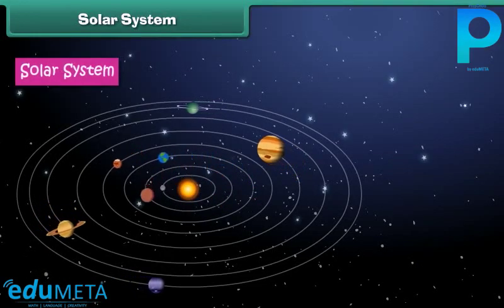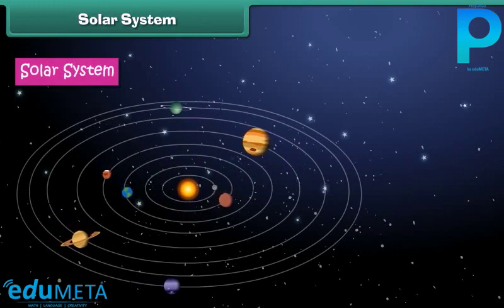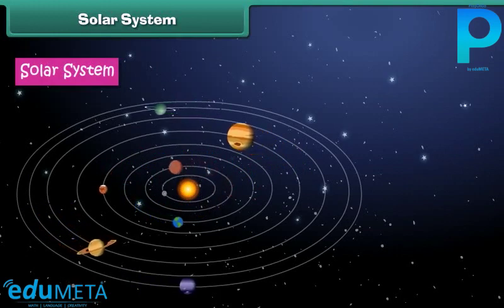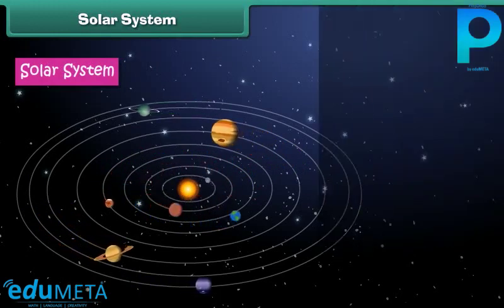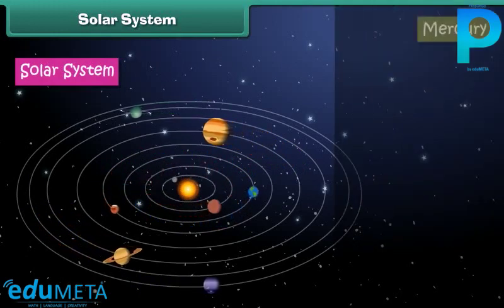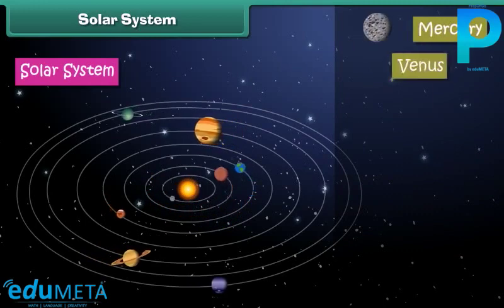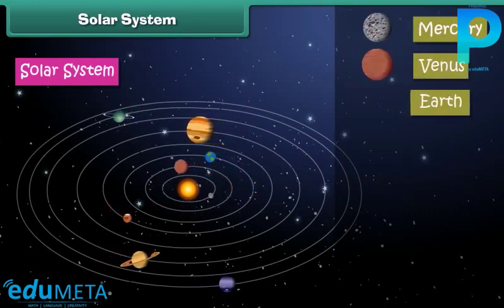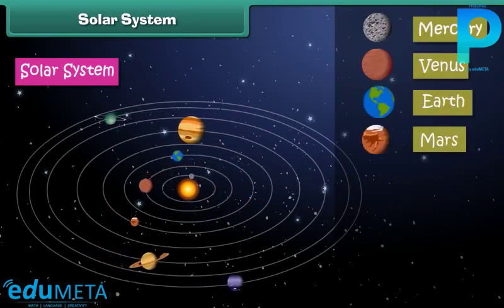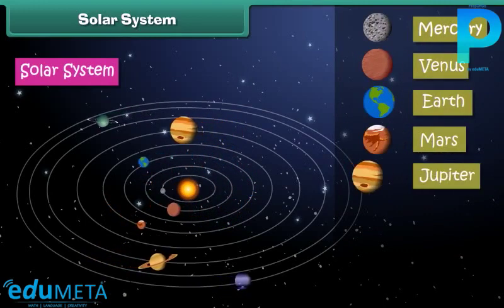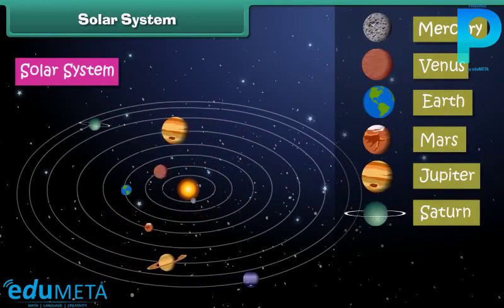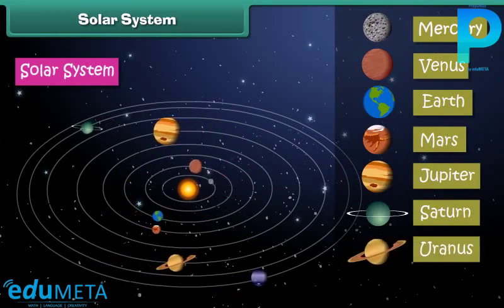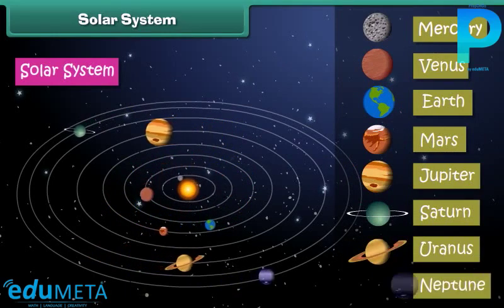The solar system consists of the Sun and the 8 planets that revolve around the Sun. The 8 planets are Mercury, Venus, Earth, Mars, Jupiter, Saturn, Uranus, and Neptune.